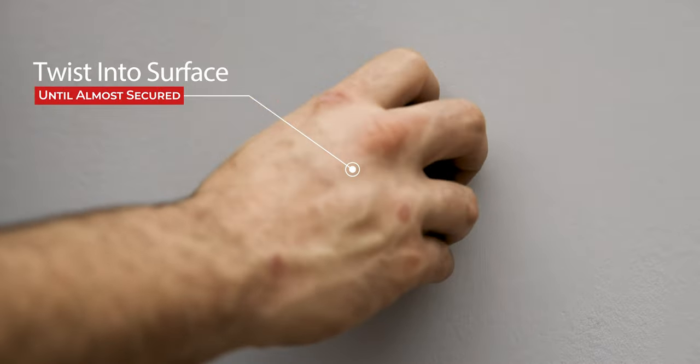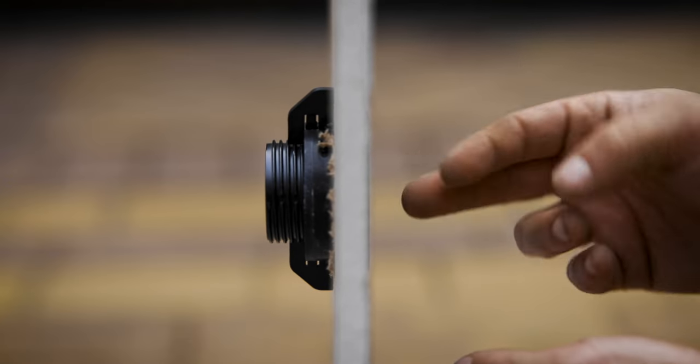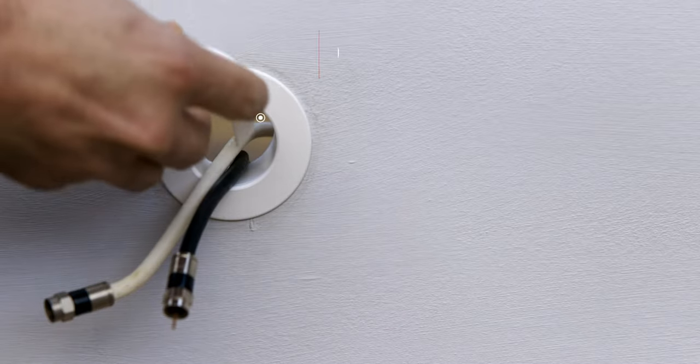Turn the tube clockwise until it is almost secured against the surface. Use the two tube inner finger tabs for final locking turns.